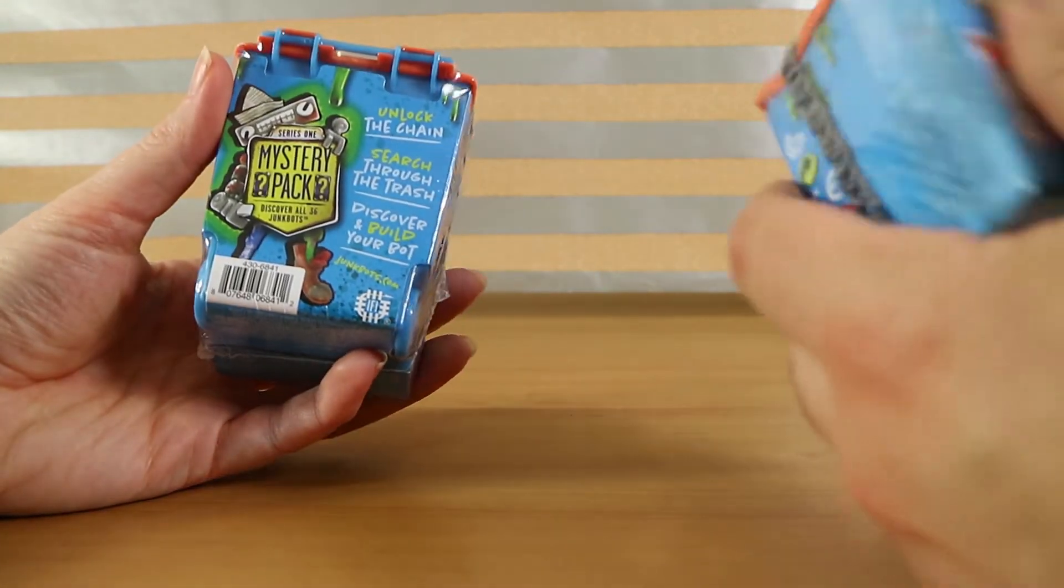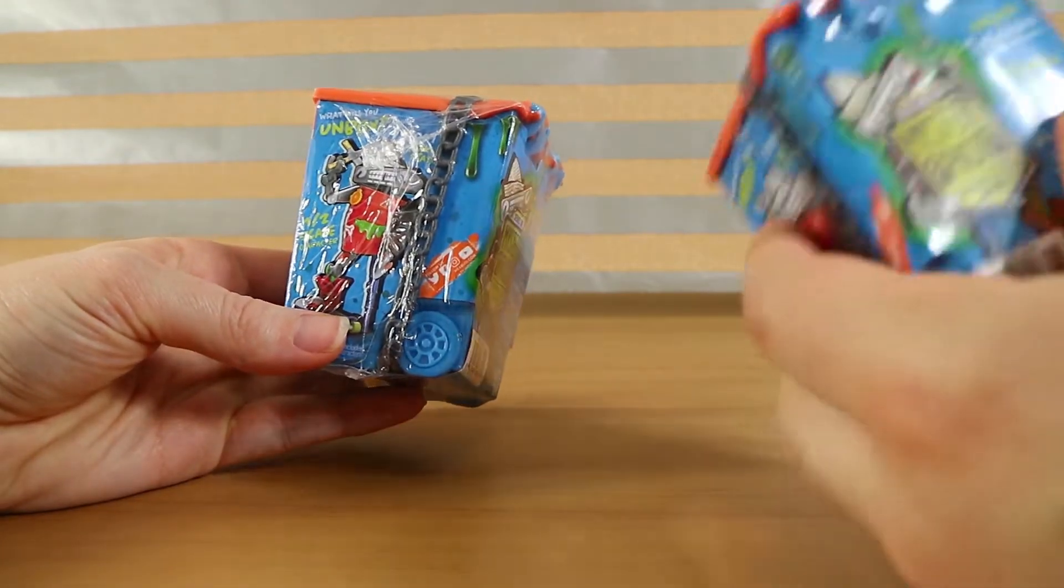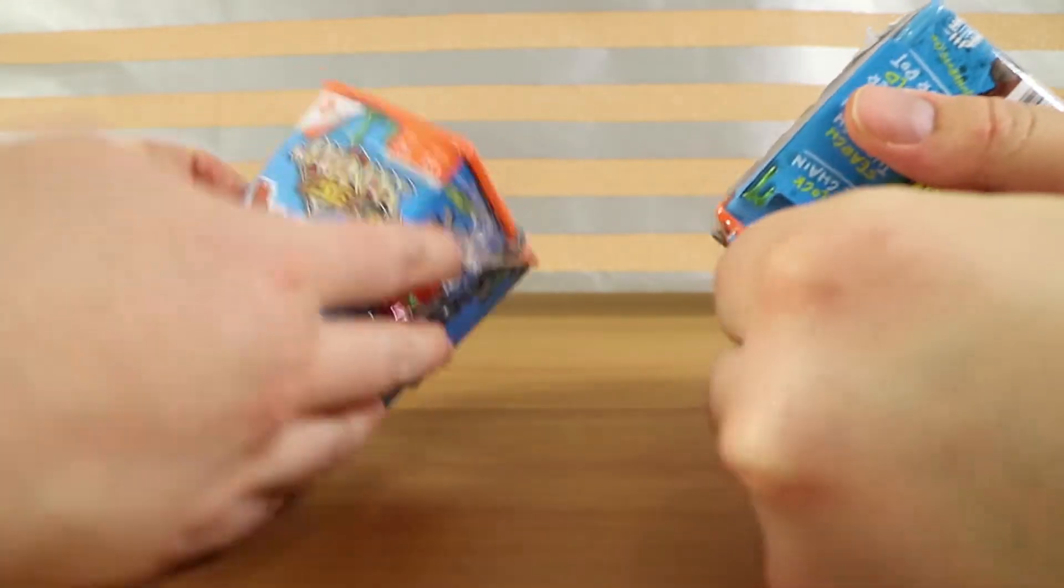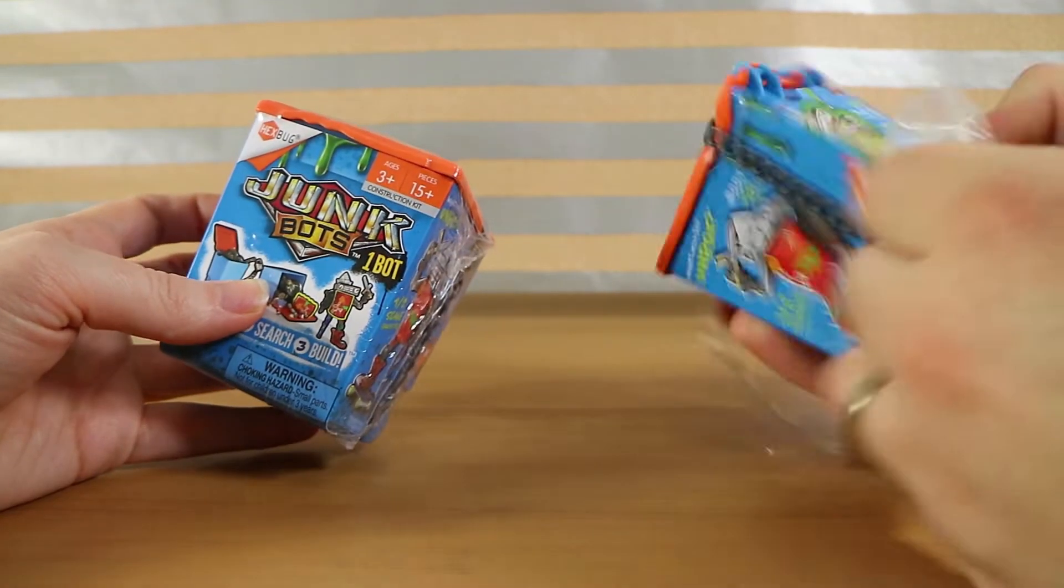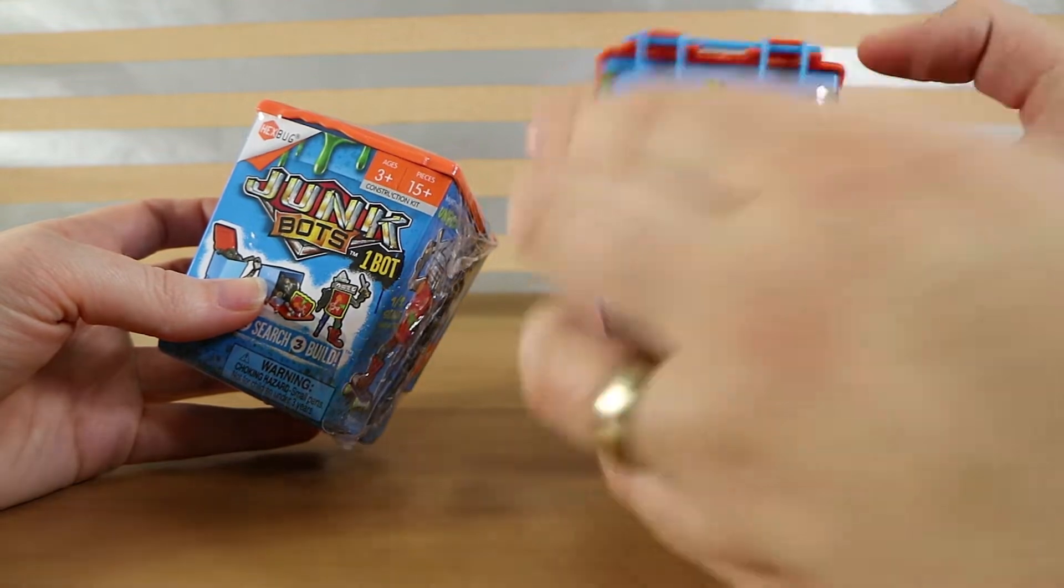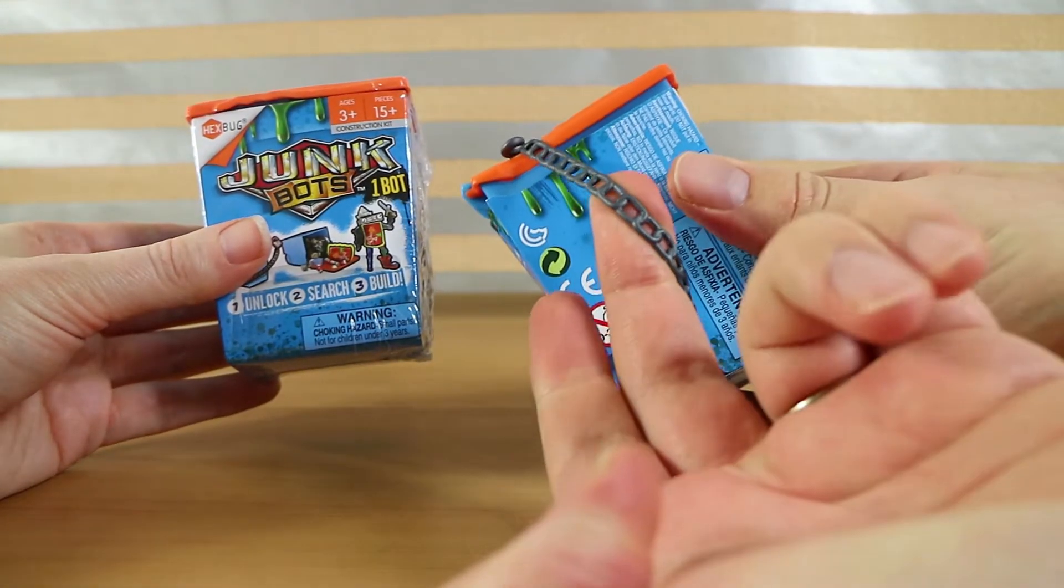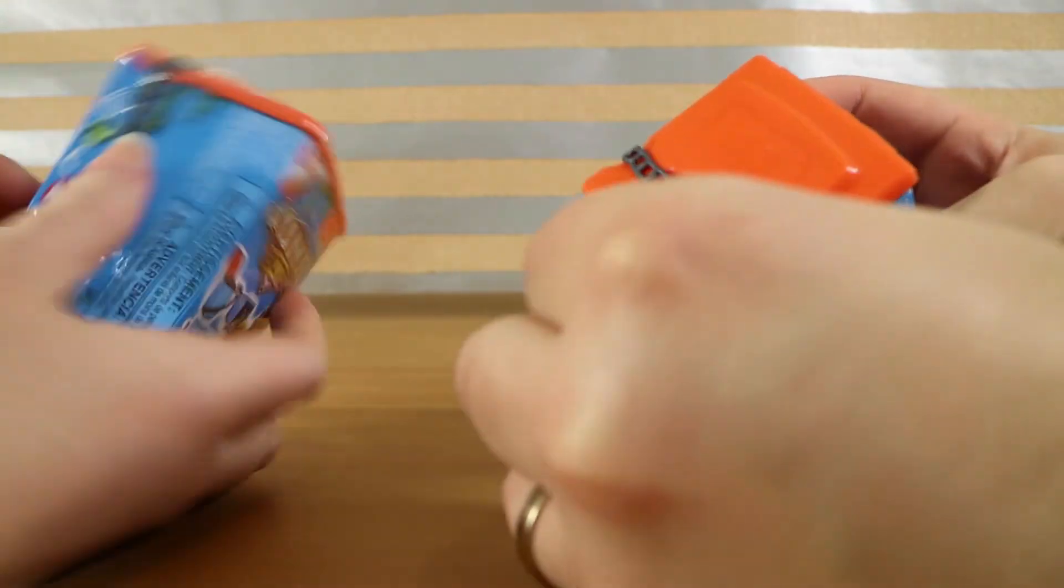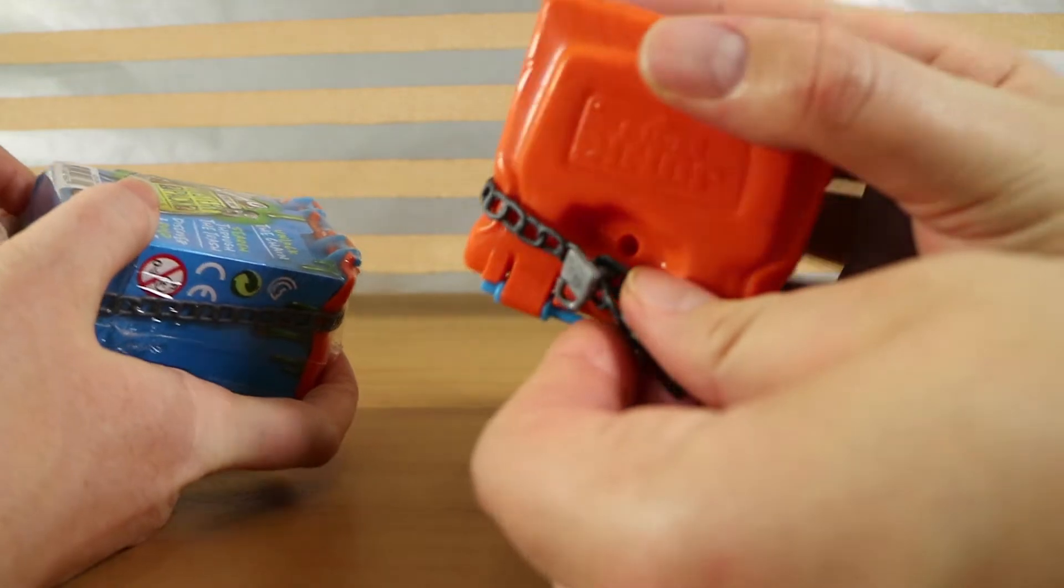This says discover all 36 junk bots. I wonder if that's over series one or if they're all out in one set, I don't know. Age is three plus. It says 15 plus pieces. So I guess it depends on maybe which character you get. That's almost like a rubbery sort of material. The lock just sort pops off.